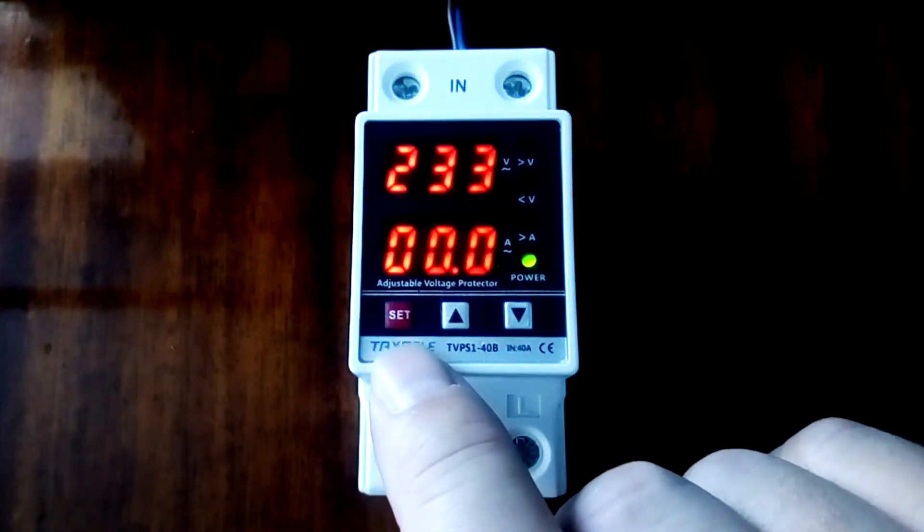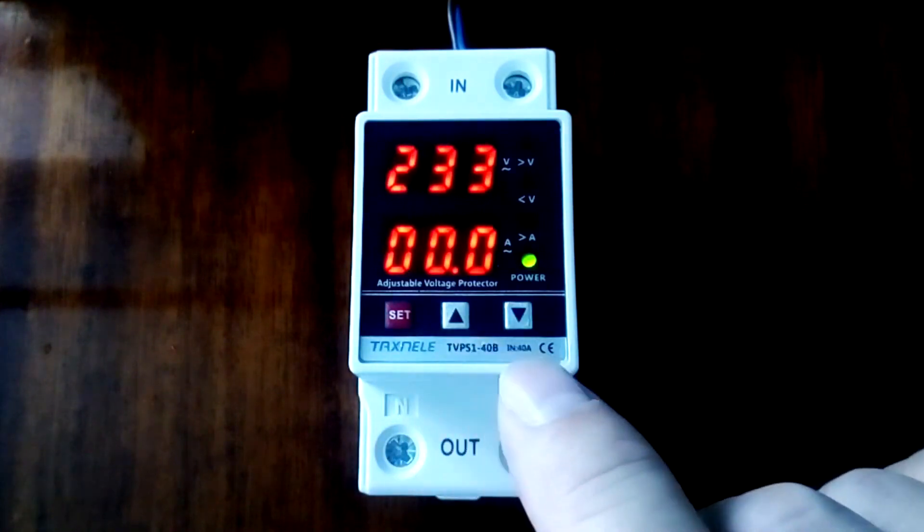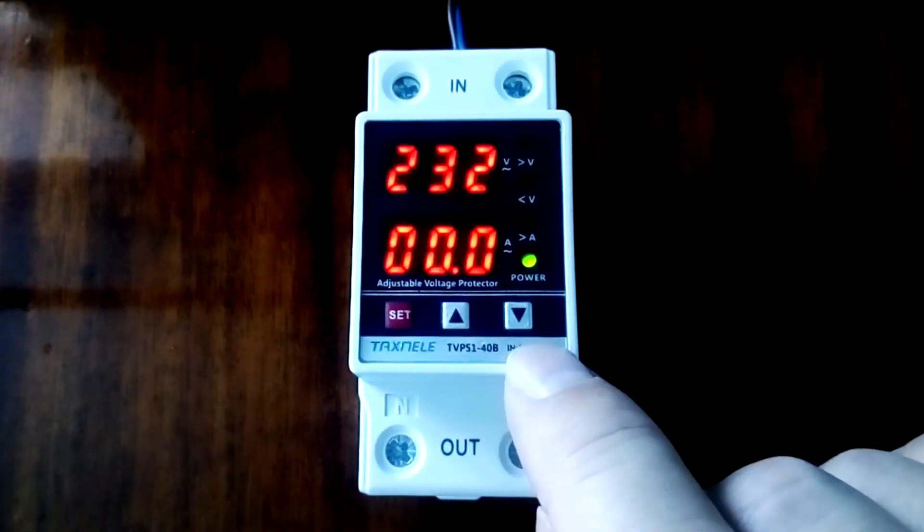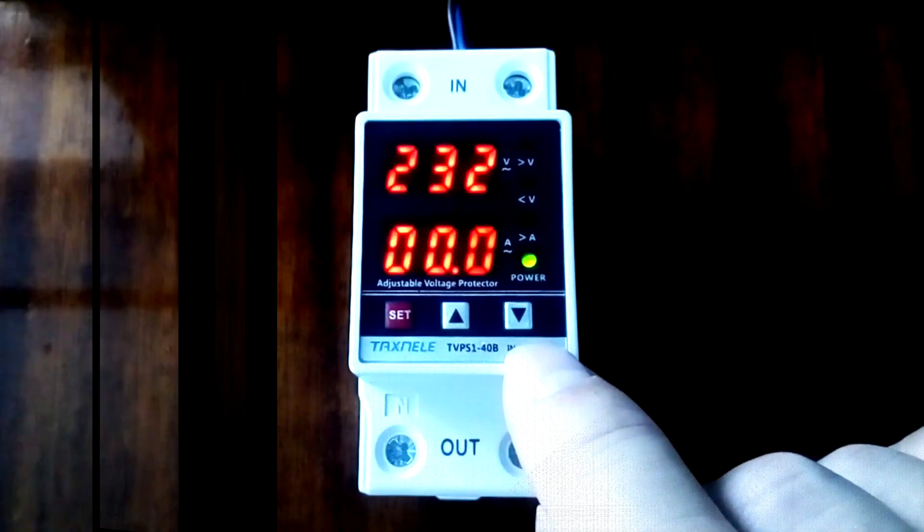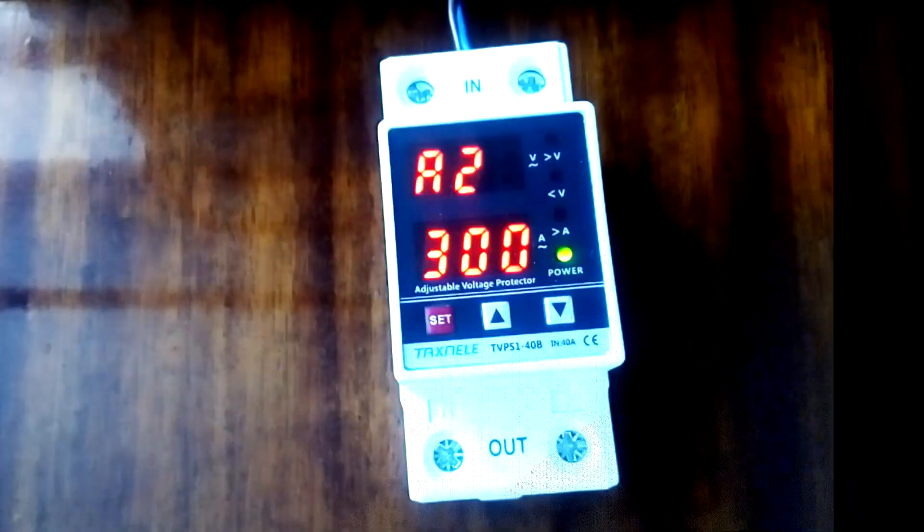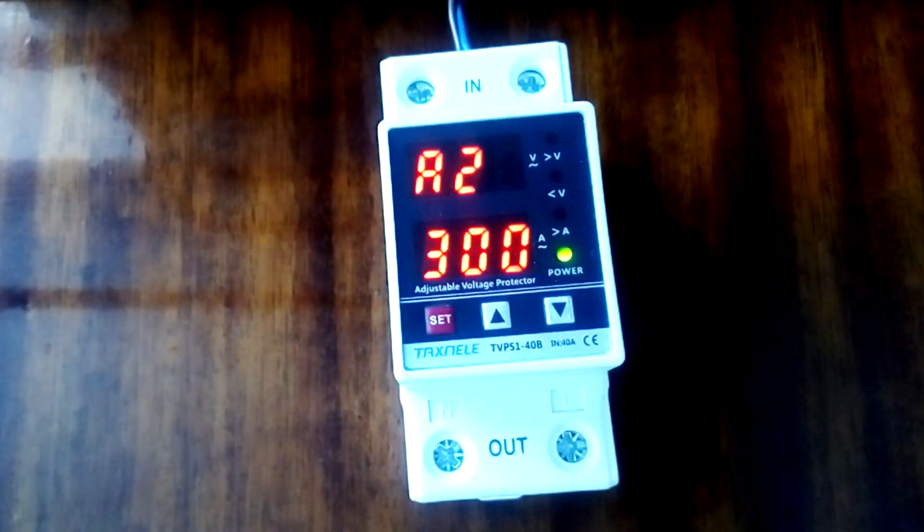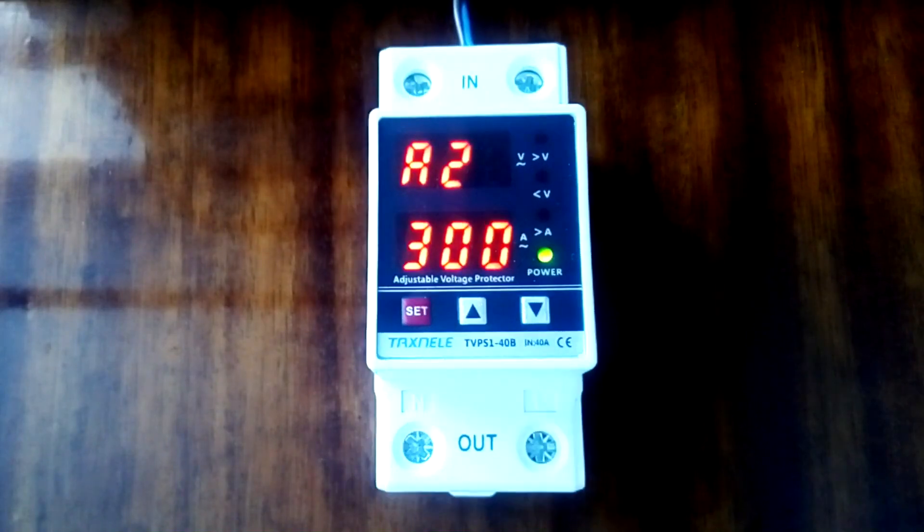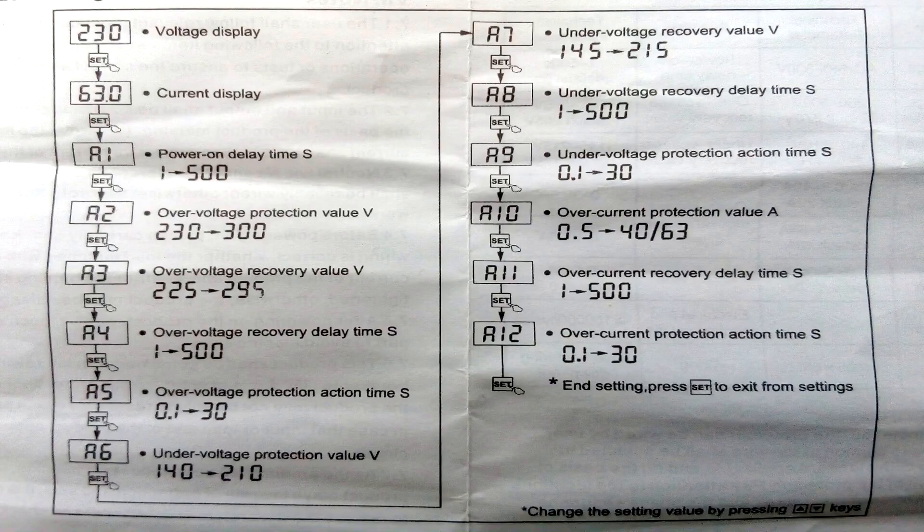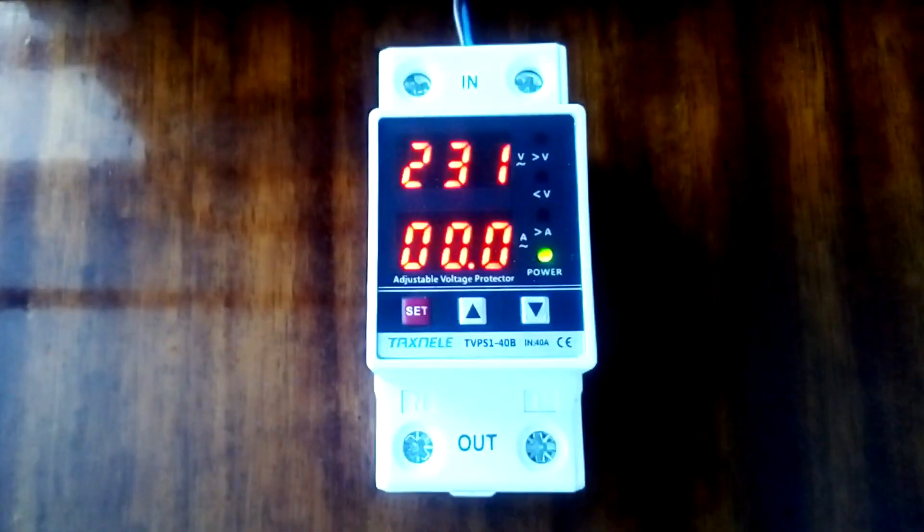To program the voltage relay there are three buttons: set, up and down. Using the set button we switch the values that we want to change, and using the up and down buttons we set this value. Holding the button for a long time turns on the accelerated mode of changing the value. How to program the relay can be found in the instructions for the voltage relay. True, the instructions are in English. Google Translator will help you.